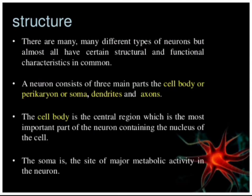Now we talk about the structure of neurons. Neurons can be of different types: unipolar, pseudopolar, bipolar. But for all these types of neurons, the main structural components are essentially the same.